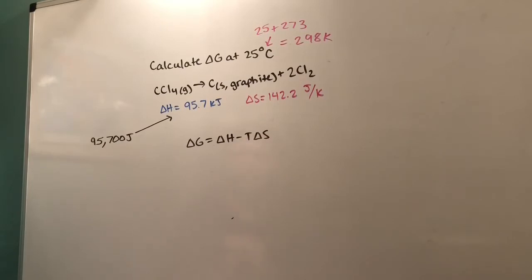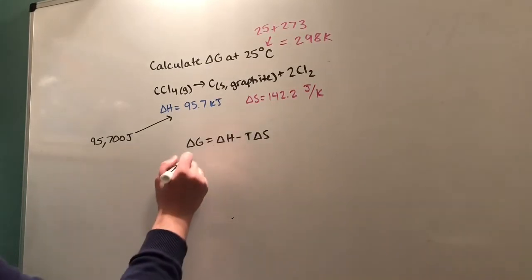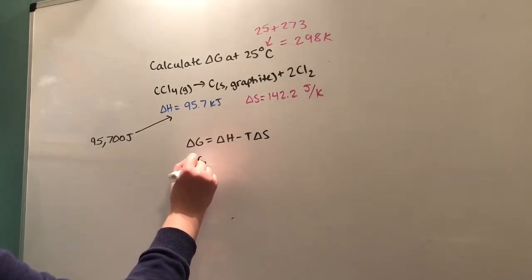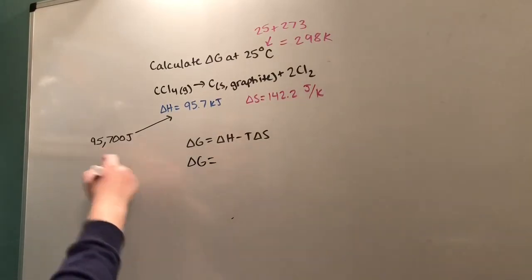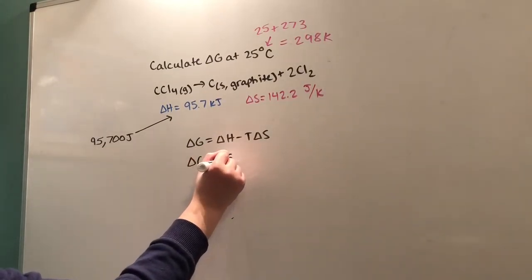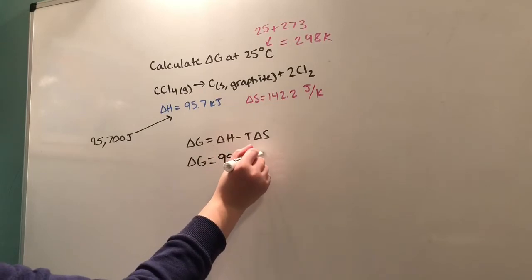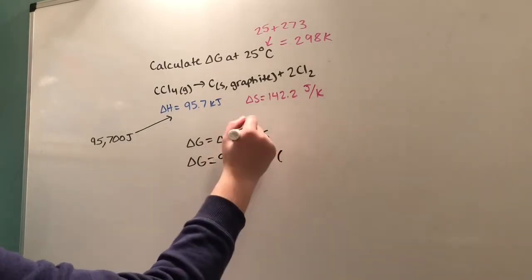Now we're going to plug these values into our ΔG formula and get our answer. So ΔG = ΔH, that's 95,700 joules, minus T—our temperature we found was 298 Kelvin—